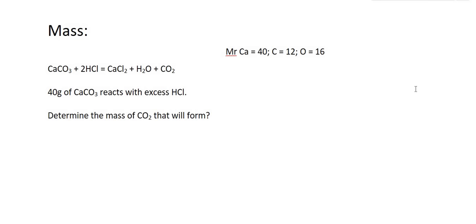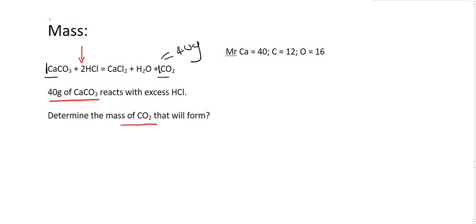The next way they could ask is by using mass, but remember our goal is always to get moles first. Here they've given us this equation — typically if we see numbers in the front it shows it's already balanced. They've given us 40 grams of calcium carbonate and want us to determine the mass of CO2. You can't say that since CaCO3 and CO2 are in a 1 to 1 ratio the answer must be 40 grams, because those ratio numbers are for moles, not grams. So our first step is to convert 40 grams of CaCO3 into moles.